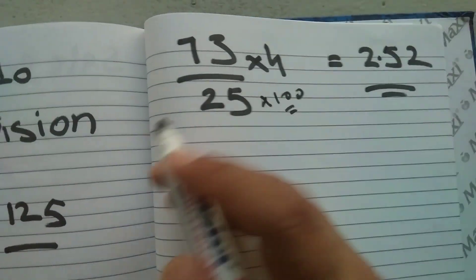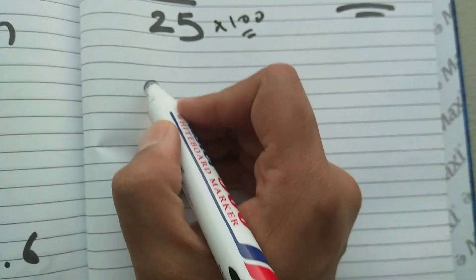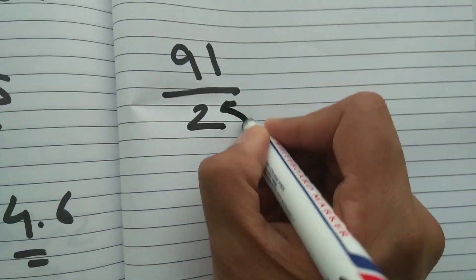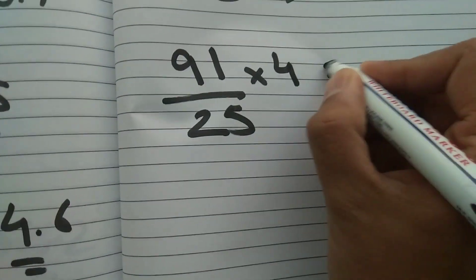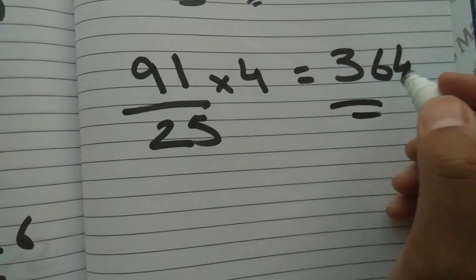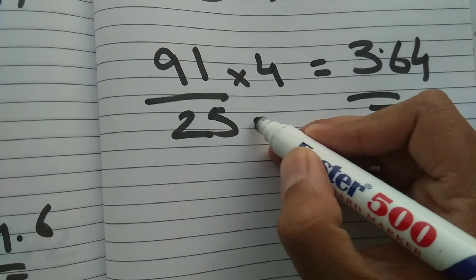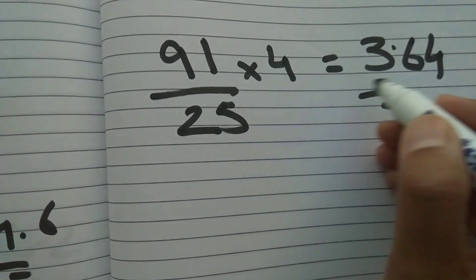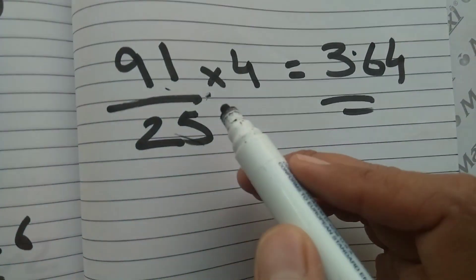Let's try another example — 91 divided by 25. Just multiply 91 by 4; the answer is 364. Place the decimal point here to get 3.64. Since we multiply 25 by 4 to get 100, we divide 364 by 100 to get 3.64. Instead of the whole division process, I just use this shortcut trick.